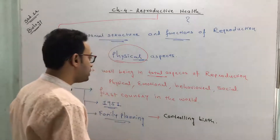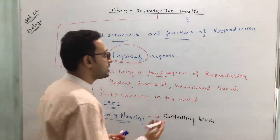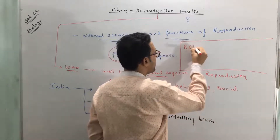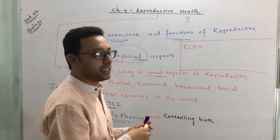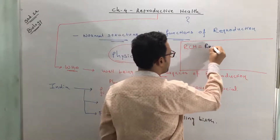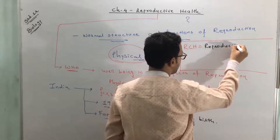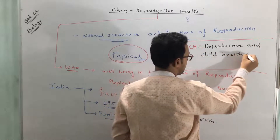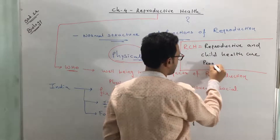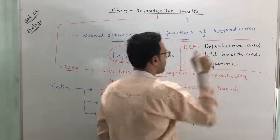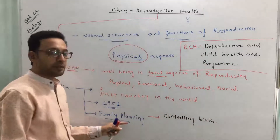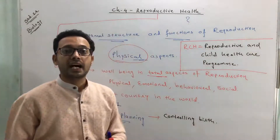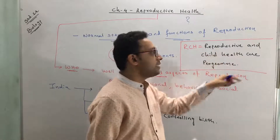Now we have widened its scope and aspects, and so the name of the program has been changed. The program has been relaunched and is now called RCH. The full form of RCH is Reproductive and Child Healthcare Program.